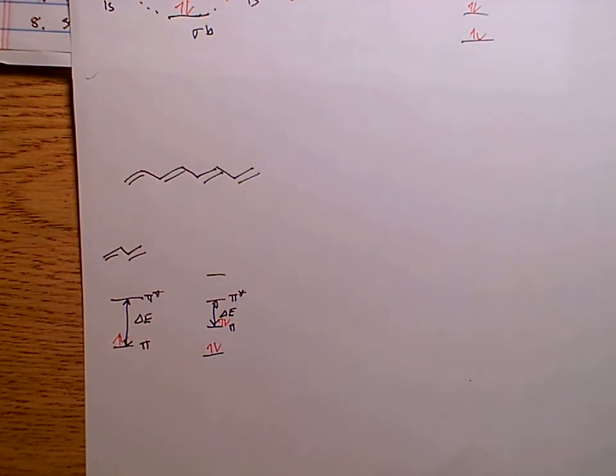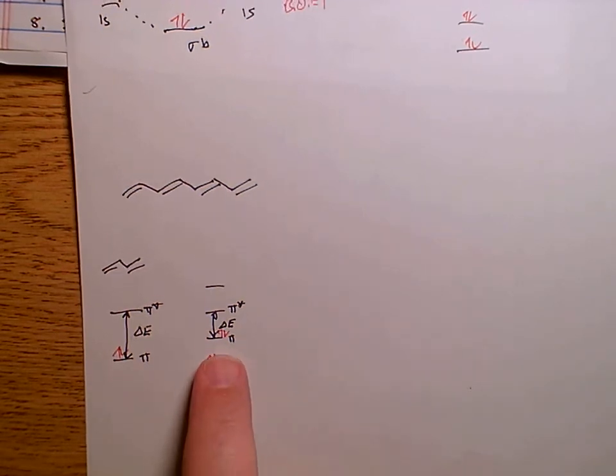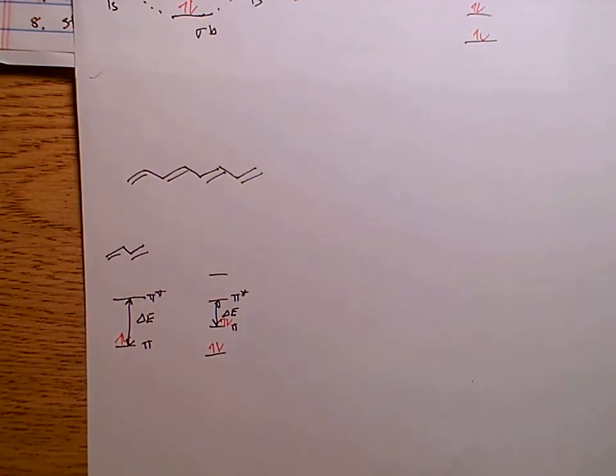And so, molecules that have a lot of pi bonding interaction, or pi bonds that are conjugated together, molecules with lots of pi bonds conjugated together, tend to have color because, finally, we're in the visible region of the electromagnetic spectrum of where this delta E, this energy gap can be.